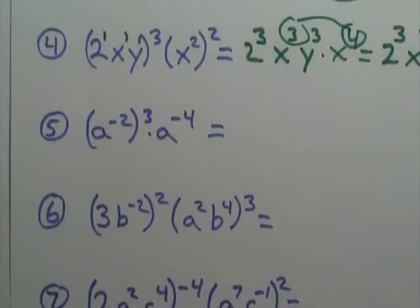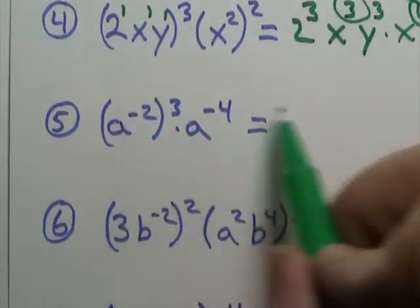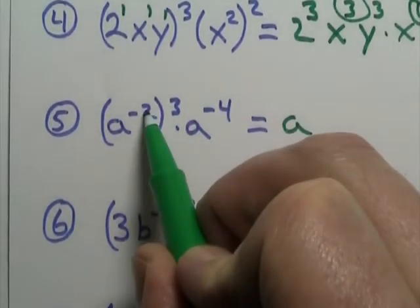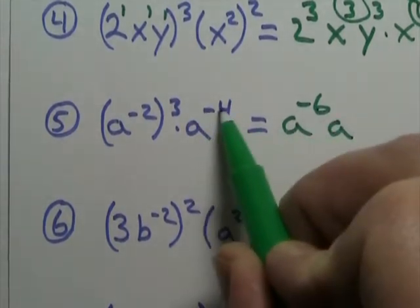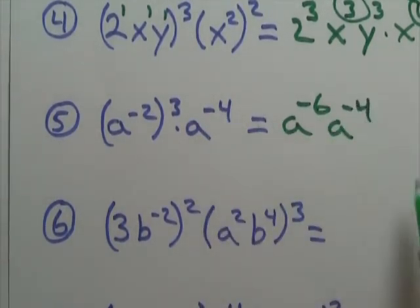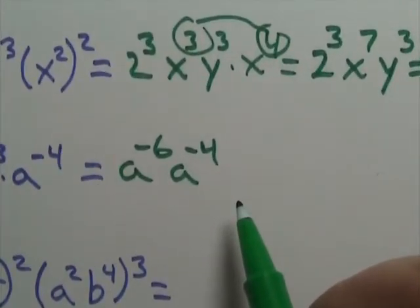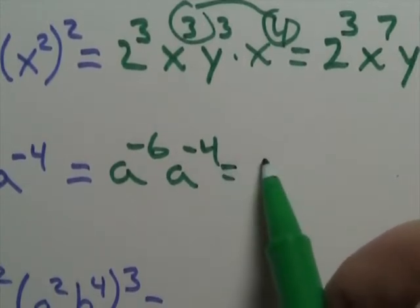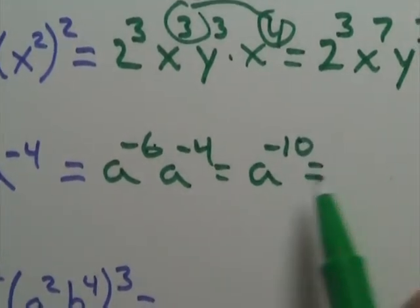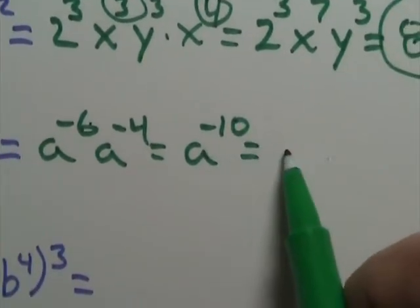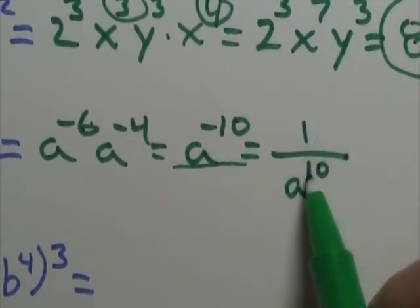Number 5. That's a to the negative 2 times 3, that's negative 6, a to the negative 4. So now we add our exponents. Negative 6 and negative 4 is negative 10. You can't leave a negative, so we cross the bar. And that's a to the 10th — 1 over a to the 10th.